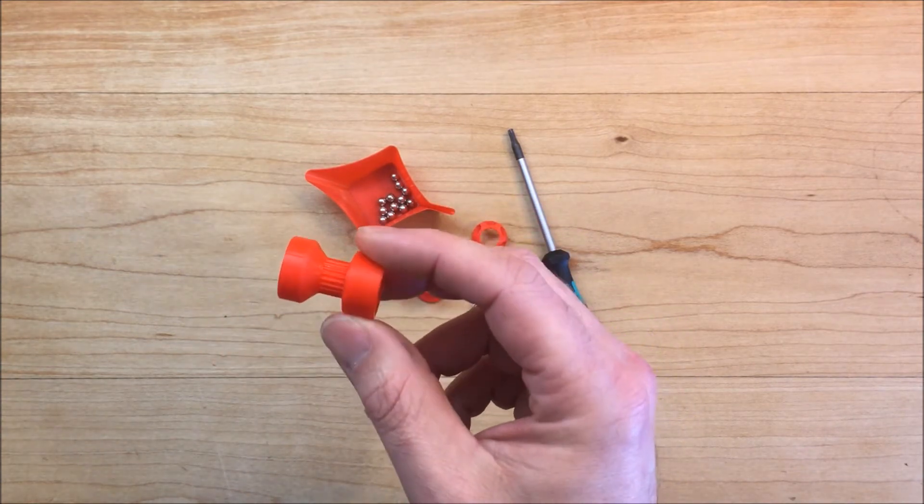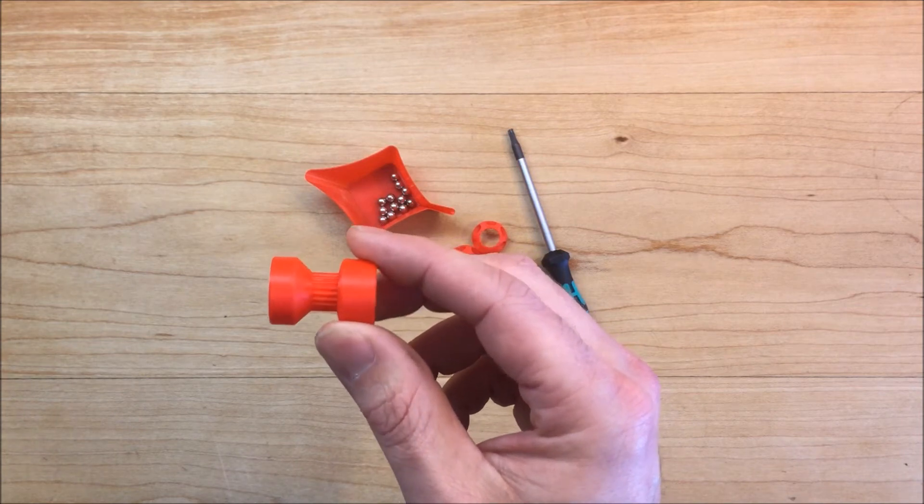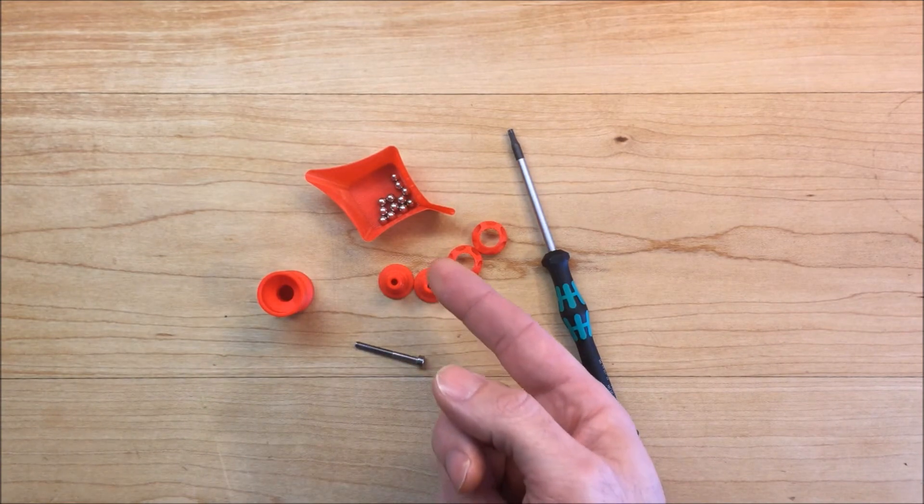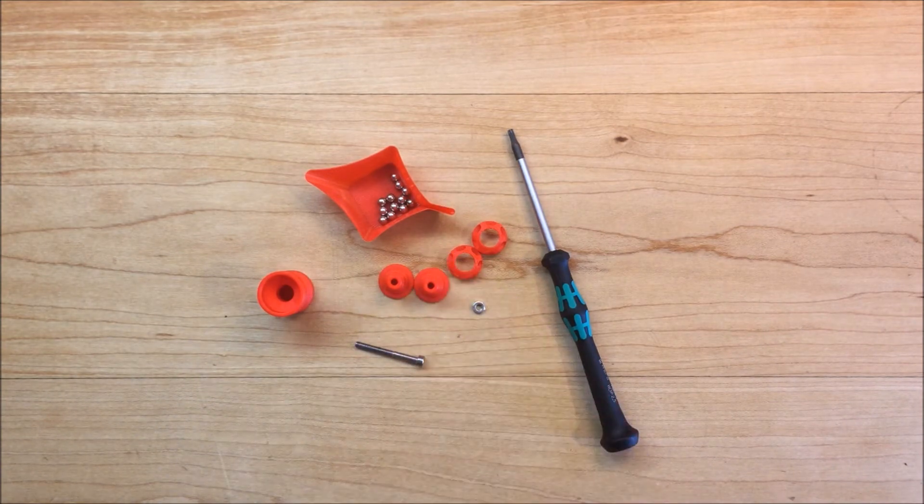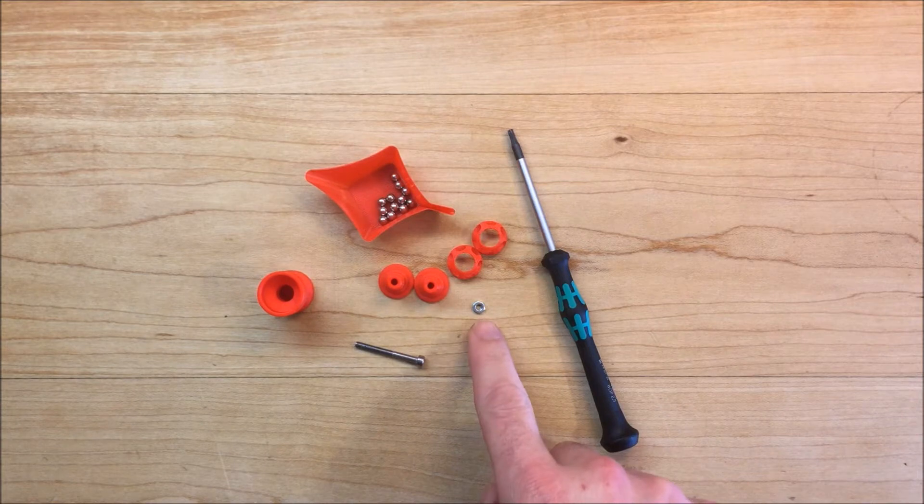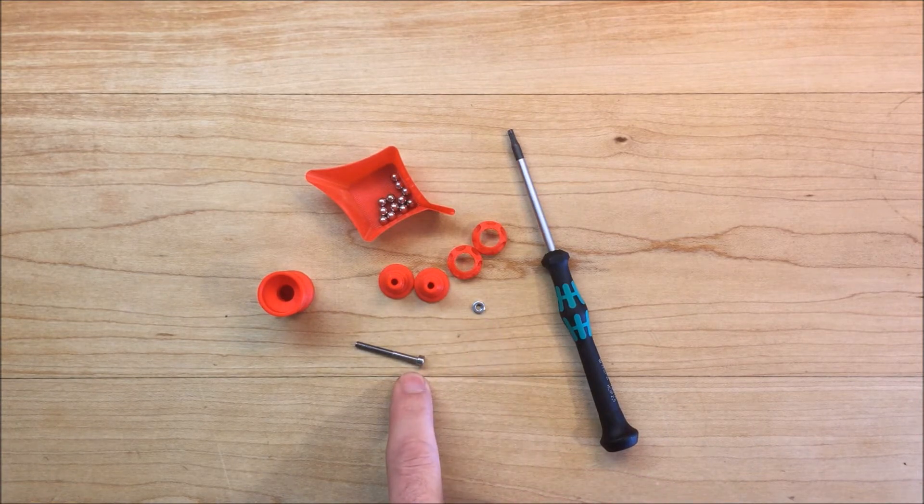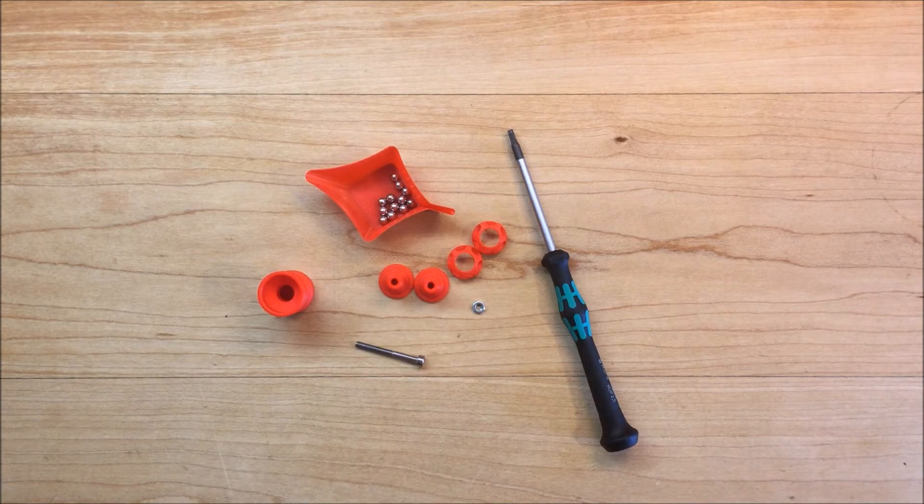The pulley is designed for a GT2 belt 6 millimeters wide and has 20 teeth. You also need 12 standard BBs 4.5 millimeters in diameter, one nut for an M3 screw, and one socket head cap screw 30 millimeters long.